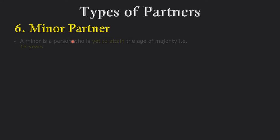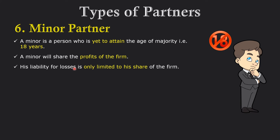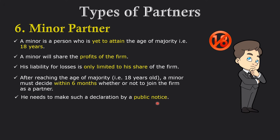Sixth is minor partner. A minor is a person who has not yet turned 18 years old. A minor partner is one who is under 18 years of age. Minor partners are only entitled to profit in the firm and are not included in working decisions. Their liability is also limited to their share only. When a minor attains the age of majority — that is, when they turn 18 — they must decide within 6 months whether they want to remain a partner in the firm or not, and this information must be provided to the firm through a public notice.